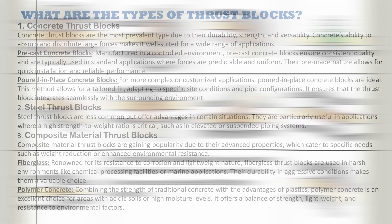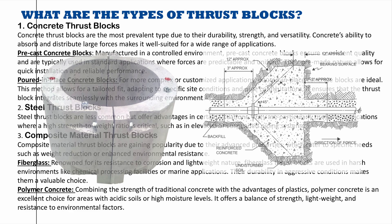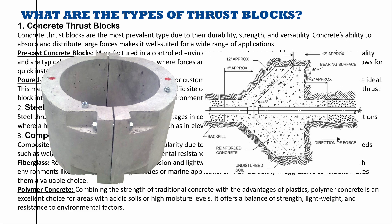What are the types of thrust blocks? Thrust blocks are used in constructing underground piping. Concrete thrust blocks are the most prevalent type due to their durability, strength, and versatility. Concrete's ability to absorb and distribute large forces makes it well suited for a wide range of applications.